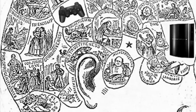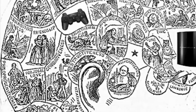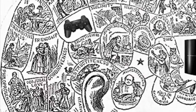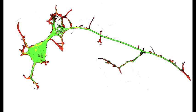Our sensations, behaviors, learning, and memory are all functions of the brain and nervous system. These brain activities are carried out by a complex system of billions of specialized cells called neurons.